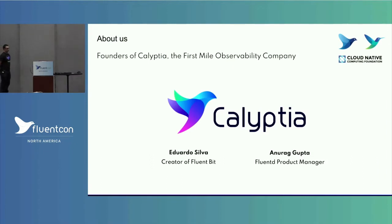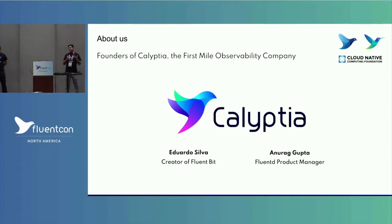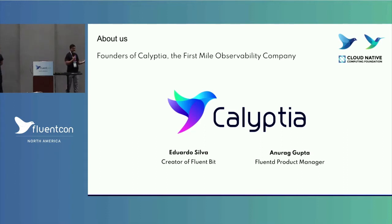We really concentrate on what we call first-mile observability, where you're collecting all that data, and you are intrinsically doing things like parsing, enriching, redacting, and routing it to end destinations.